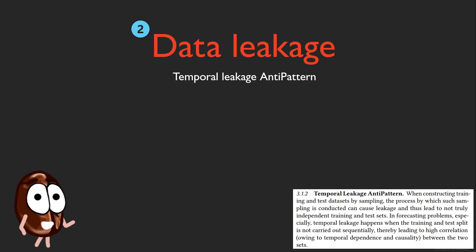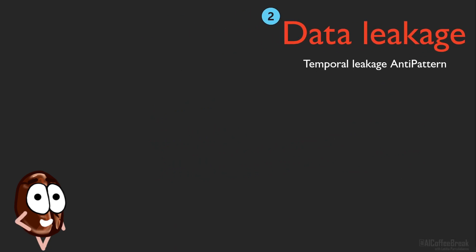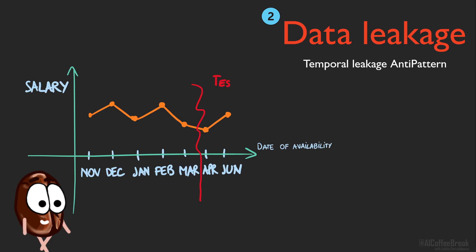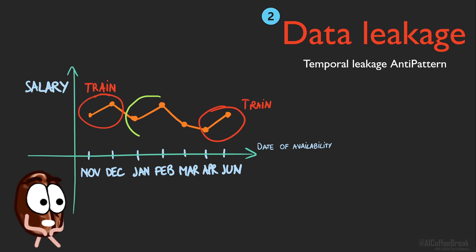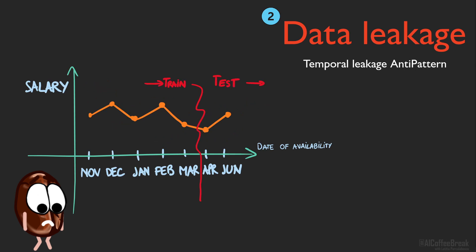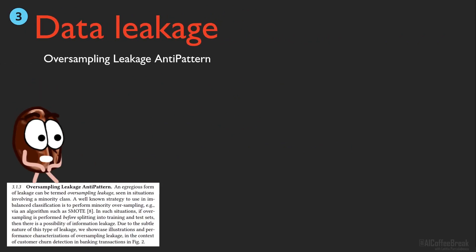The next data leakage anti-pattern, called temporal leakage, is also related to time series data. With an ideal test set, we would estimate the model's true performance when deployed into the real world. Ideally, the test set would be independent from the training set to estimate how well the model performs in unexpected situations. But this paper warns us that if we take a time series dataset and sample train and test sets from it in a non-sequential manner, then the two are not independent anymore, because we have technically seen the future during training already. We have turned this into an easier interpolation problem, what was previously an extrapolation problem of predicting the future, which is harder. The next type of leakage is oversampling.